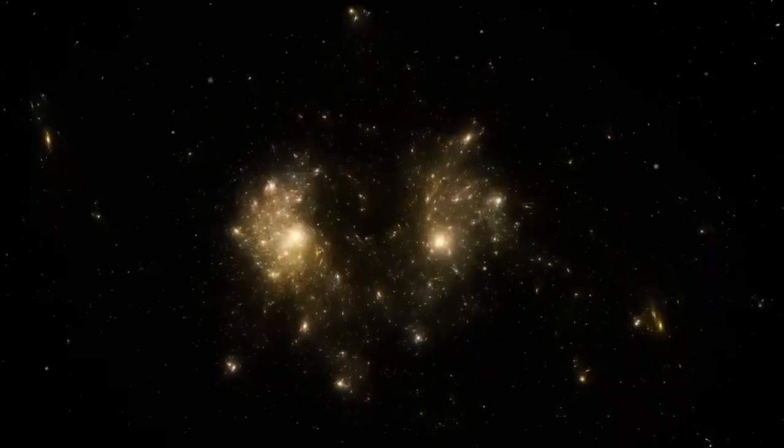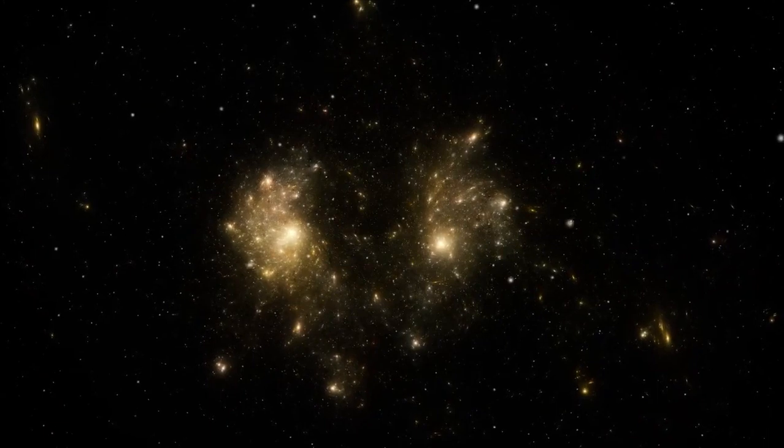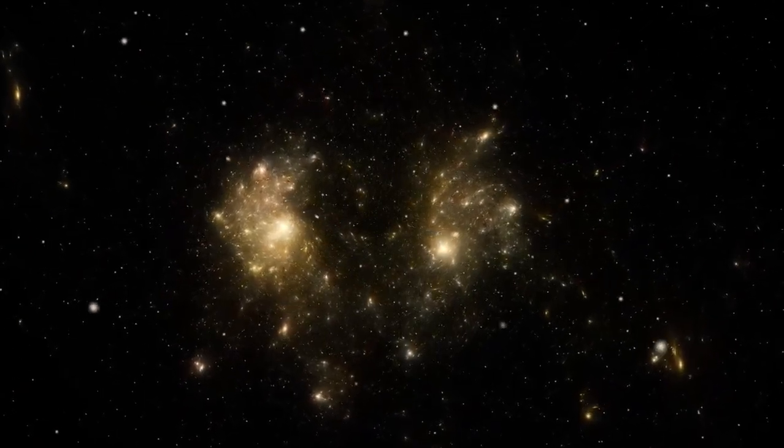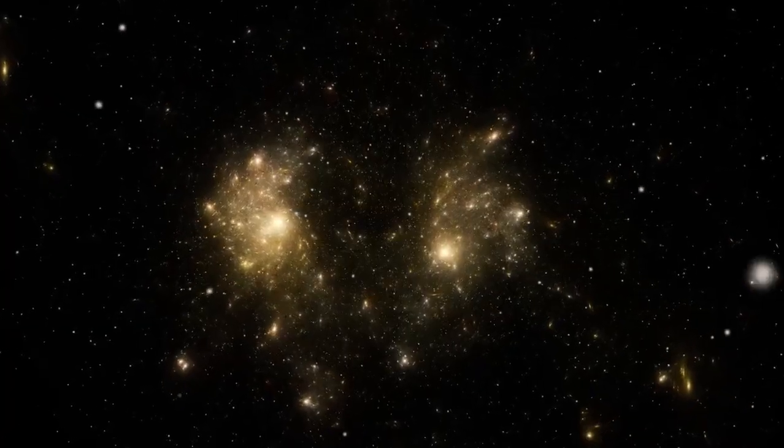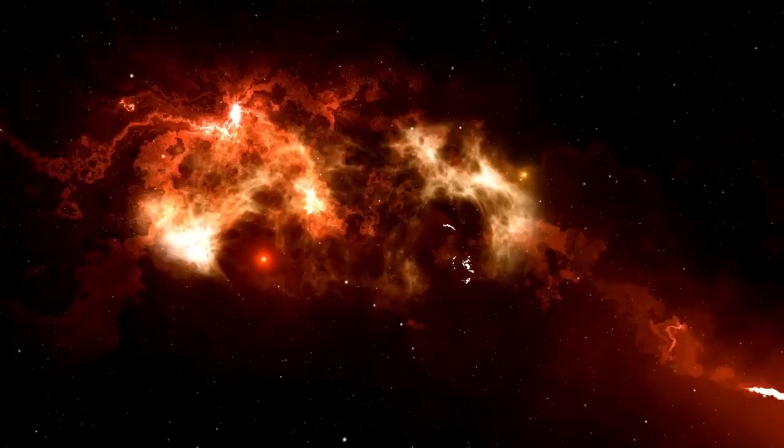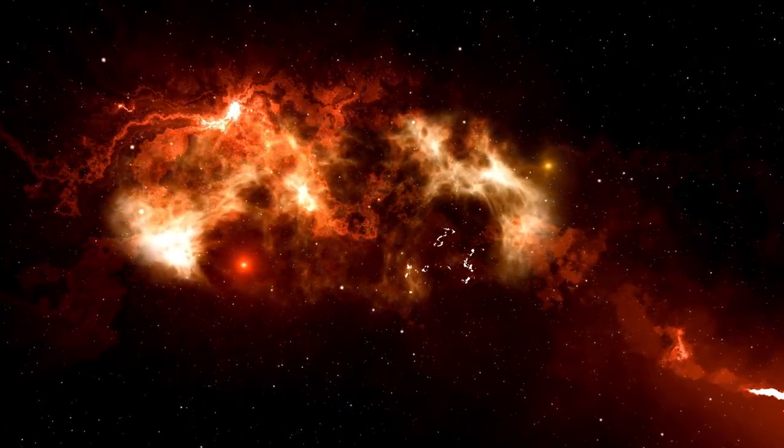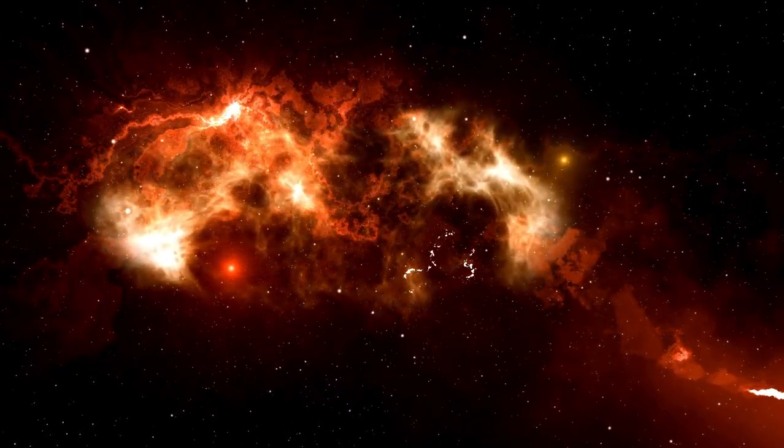Webb's ultra deep field exposures show us that these old galaxies are not spaced at random. They are embedded in a fragile, interconnected web, an early incarnation of the cosmic web. This cosmic web is a huge structure composed of filaments and voids of galaxies and dark matter that gives the universe its large-scale design.